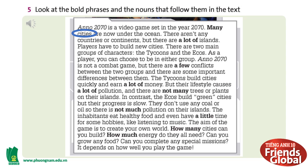Anno 2070 is a video game set in the year 2070. Many cities are now under the ocean. There aren't any countries or continents, but there are a lot of islands. Players have to build new cities. There are two main groups of characters, the Tycoons and the Echoes. As a player, you can choose to be in either group. Anno 2070 is not a combat game, but there are a few conflicts between the two groups, and there are some important differences between them. The Tycoons build cities quickly and earn a lot of money, but their lifestyle causes a lot of pollution, and there are not many trees or plants on their islands.